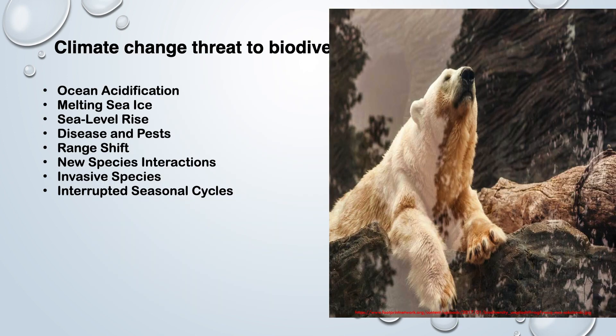Ocean acidification: We can only blame ourselves for a 30% drop in the pH of the ocean. Oceans absorb nearly a third of the carbon released into the atmosphere through human activity. This acidification renders some crustaceans and corals unable to produce their protective shells and skeletons. Coral reefs, which serve as habitat for thousands of marine species, are being destroyed by bleaching due to ocean acidification. This destruction of marine life is a threat to entire ecosystems, including humans.